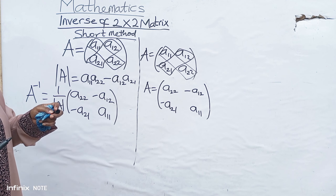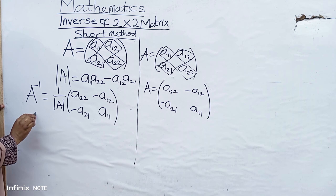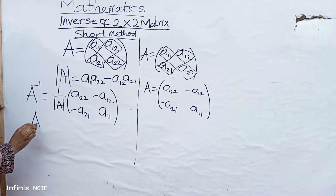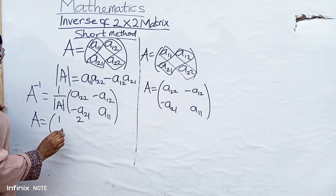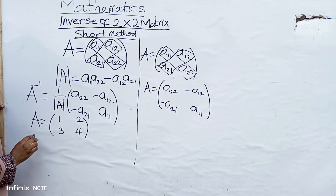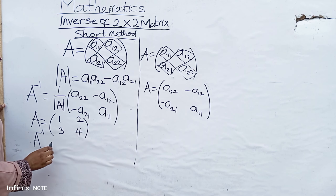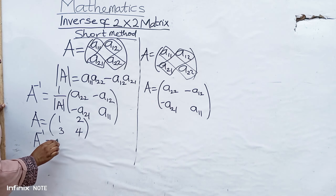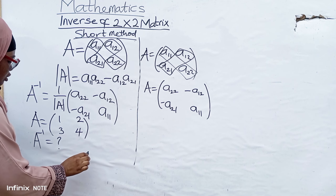For example, let's say we have A equal to 1, 2, 3, 4 — and we have to find the inverse of this matrix A.